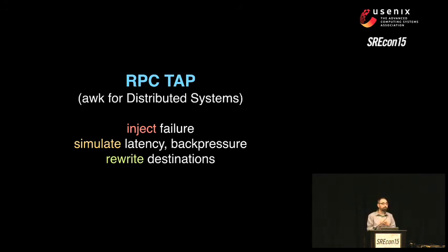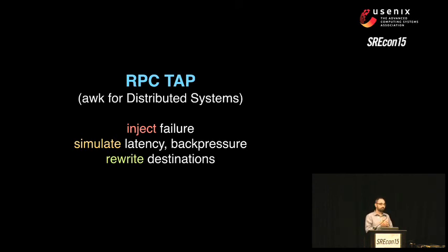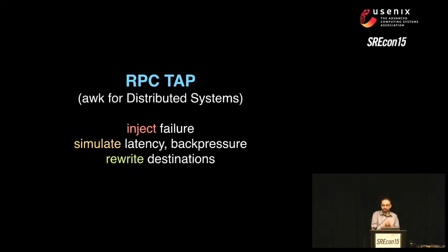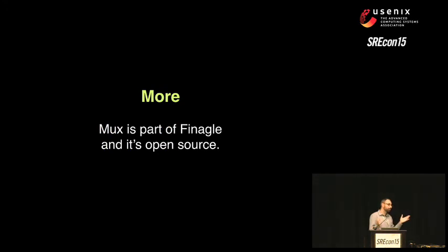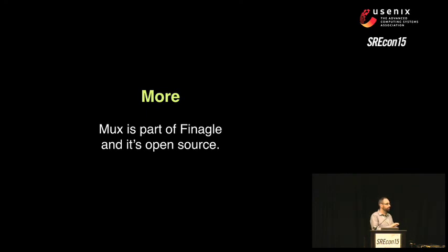You can inject failures, simulate latency, and even rewrite destinations — what happens if this goes to a failed-over system with different behavior? With Mux we implemented this as a Hack Week project in two or three days. Mux is part of Finagle and is open source — been open source for more than a year. You can use ThriftMux today. It is well documented in the source code, which is good Scala code.